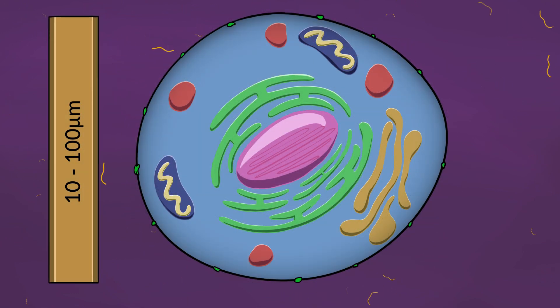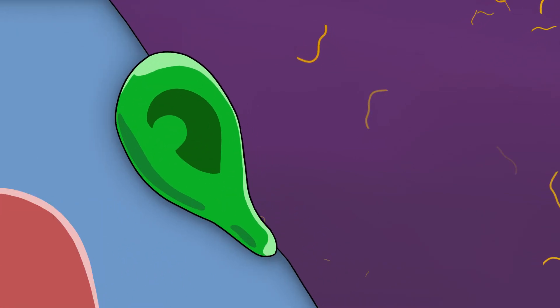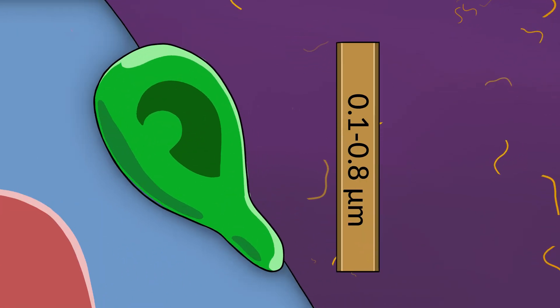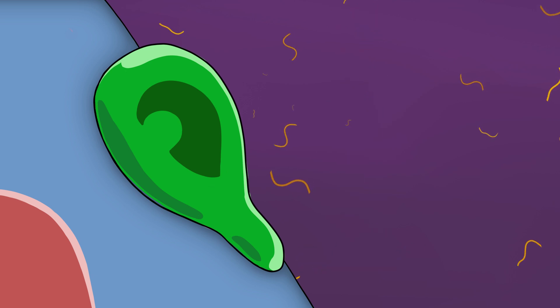Unlike yeast and bacteria, you can't just look under a microscope and identify mycoplasma due to their small size. Furthermore, as mycoplasma is lacking in cell wall, it also makes them resistant to antibiotics that target cell wall synthesis.